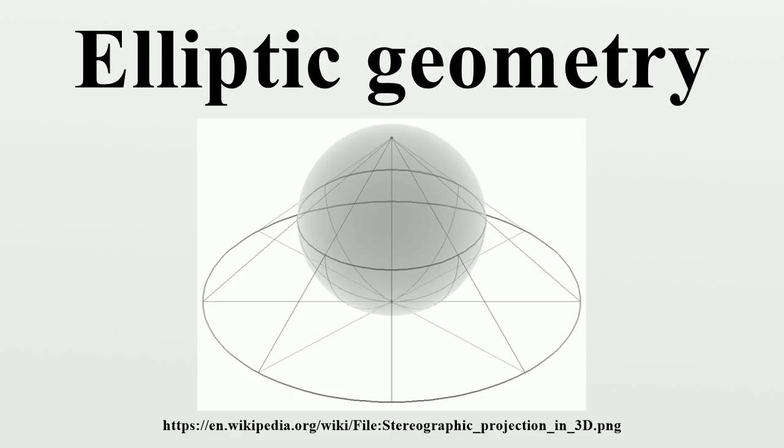Metaphorically, we can imagine geometers who are like ants living on the surface of a sphere. Even if the ants are unable to move off the surface, they can still construct lines and verify that parallels do not exist. The existence of a third dimension is irrelevant to the ants' ability to do geometry.